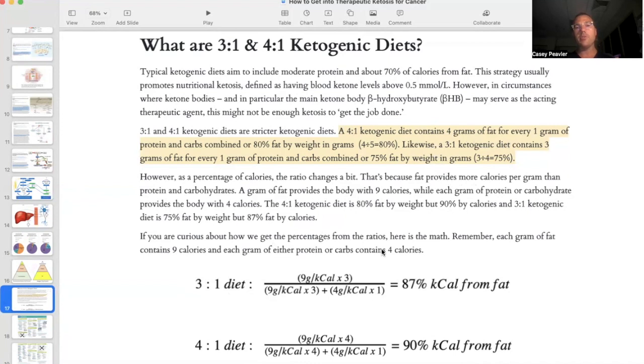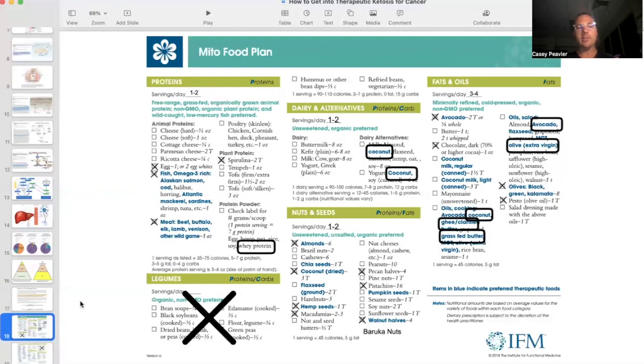And what this looks like are these formulas right here. Basically, a 3 to 1 is going to be slightly lower percent calories from fat versus a 4 to 1, which is a higher percent calories from fat. What does this practically look like?